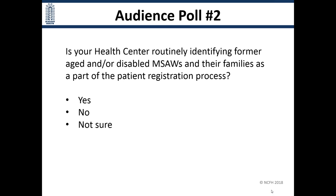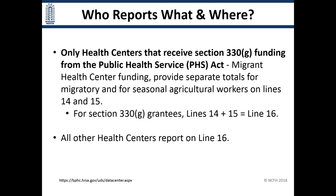For the 14% who are unsure, we hope this helps you get it right. The next question is who reports what and where. The UDS guidance says only health centers that receive Section 330G funding — that's migrant health center funding — should fill out lines 14, 15, and 16. All other health centers only report on line 16. Lines 14 and 15 separate out migratory and seasonal, while line 16 aggregates both numbers together.